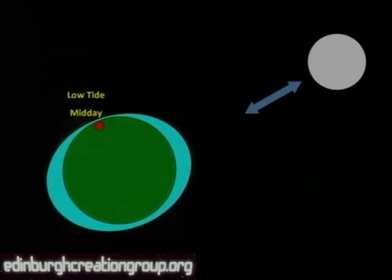Standing here, you can see that the water level is very low, and this of course is low tide. I'm just saying that it's midday. I'm being a bit simplistic in that I'm giving you the idea that you have two tides in 24 hours, which is not strictly accurate, but it's enough to illustrate the point.